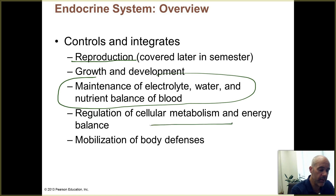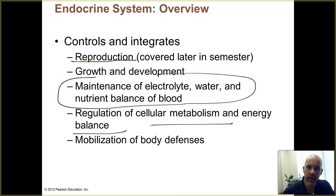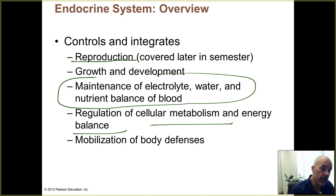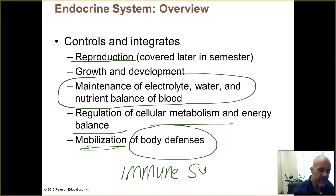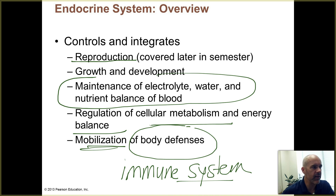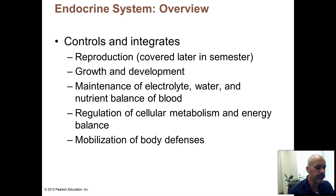Controlling metabolism and energy balance is another key function. We've all heard about people who have thyroid problems — and it's true that this can cause their metabolism to slow down, because thyroid hormones really do control your metabolic rate, how fast your cells break down nutrients and harness energy from them. The endocrine system also controls mobilization of your body defenses, which gets into the immune system, and we'll touch on that here at the beginning and discuss it in more detail later in the semester. Hopefully you can see the endocrine system controls many different bodily processes and is very important for homeostasis of the human body.